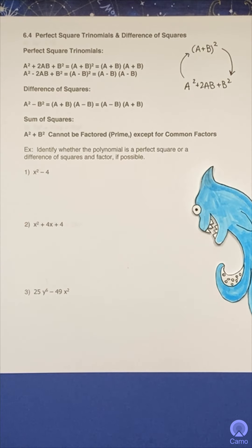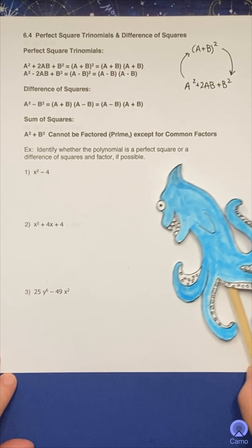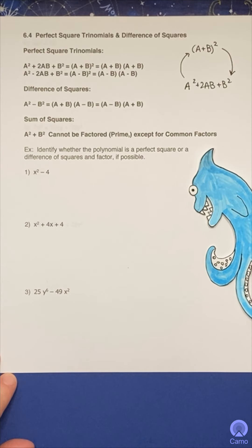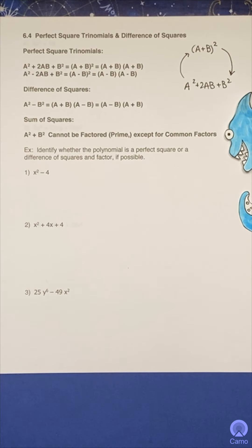Welcome back! Today we're going to be talking about 6.4. This is all about factoring perfect square trinomials and difference of squares. And so we're going to go ahead and start off with our formulas.